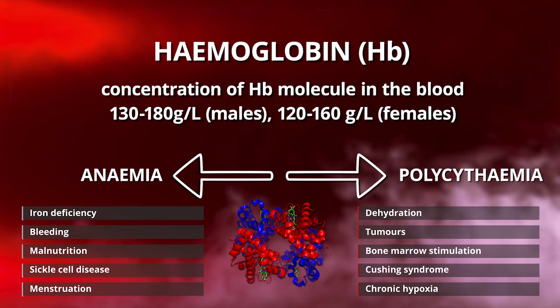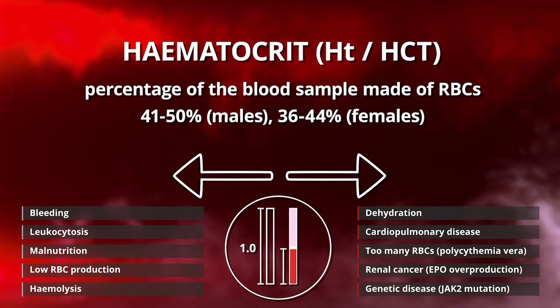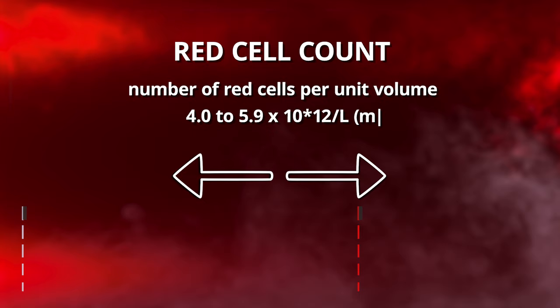Next up is haematocrit or packed cell volume — the percentage of the blood sample made up of red blood cells, measured by centrifuging the sample and measuring the length of the packed red cells against a known volume. Red cell count is quite simple: it is the number of red cells per unit volume, measured in cells per litre.